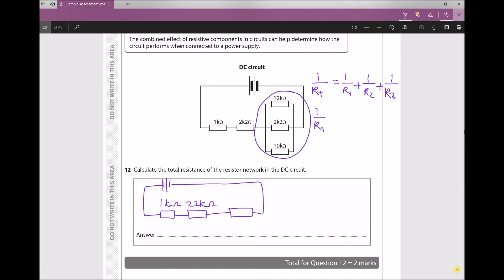We have 1 over RT, RT being the thing we're trying to find, equals 1 over RT equals 1 over 12. Now I am going to work in kiloohms. Next I have 1 over 2.2, and finally I have 1 over 10.